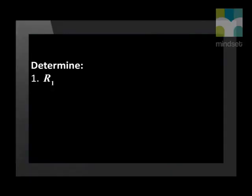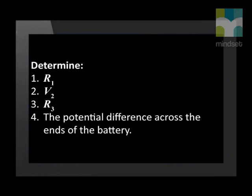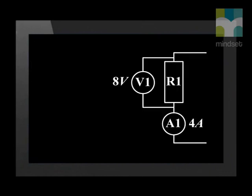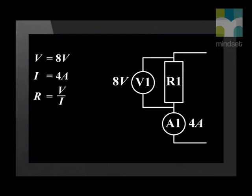Let's look at the questions: determine R1, V2, R3, and the potential difference across the ends of the battery. First we find the resistance of resistor one. The potential difference across this resistor is 8 volts, so V equals 8 volts. The current through this resistor is 4 amperes. Now we can use Ohm's law to calculate the resistance — 8 divided by 4 gives us a resistance of 2 ohms.